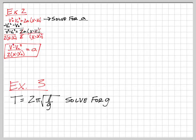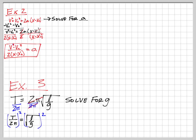When solving for G, our goal is to have G by itself and on top. The square root is kind of like parentheses — we don't deal with it until it's the only thing left. So first, we want that whole square-root-of-L-over-G term by itself. We divide both sides by 2π — the 2π's cancel on the right — leaving T/2π = √(L/G). Now we need to get rid of the square root by squaring both sides. Distributing the square gives us T²/4π² = L/G.